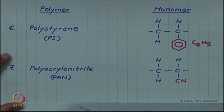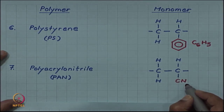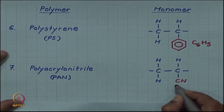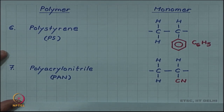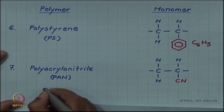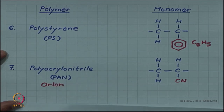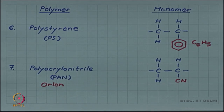Finally, we have polyacrylonitrile, where one of the hydrogens is substituted by the CN group — one carbon and one nitrogen. The commercial name for polyacrylonitrile is Orlon, and it is used as synthetic wool.